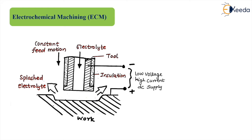When power supply is given to the workpiece and tool, according to Faraday's law of electrolysis, ions are displaced from the workpiece — the workpiece dissolves and tries to deposit over the tool. However, in ECM, the electrolyte is chosen in such a fashion that the workpiece material gets dissolved but does not deposit over the tool.